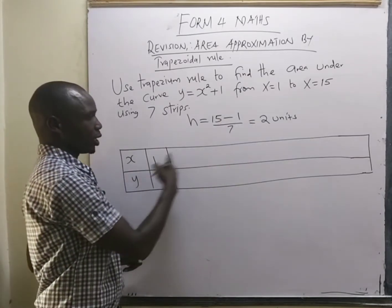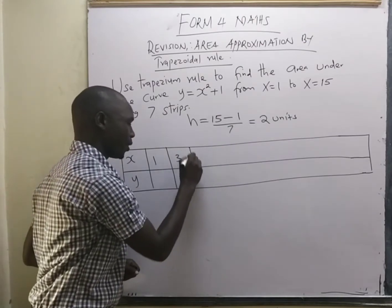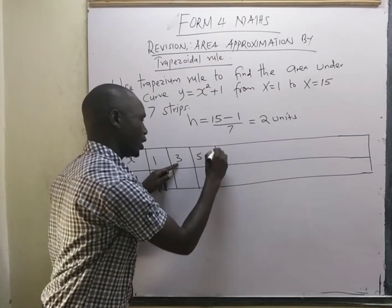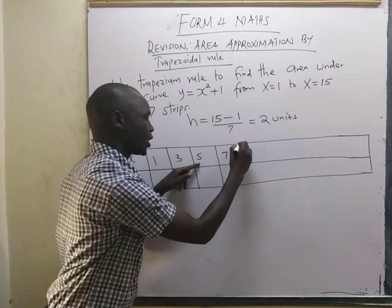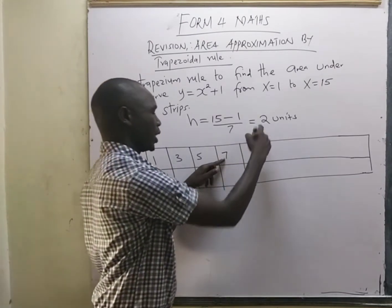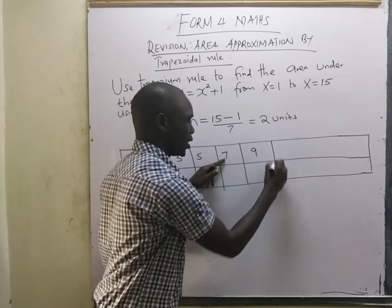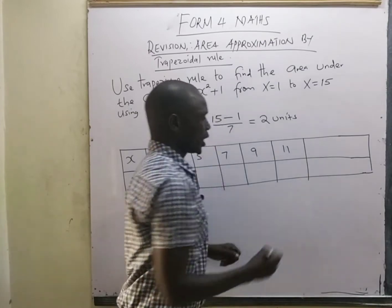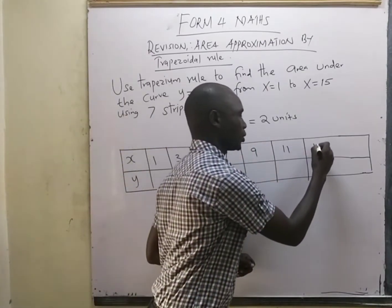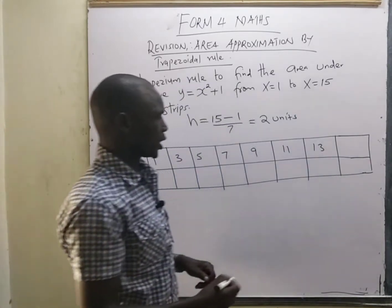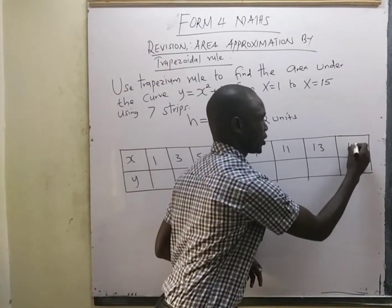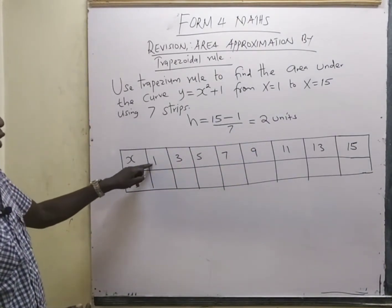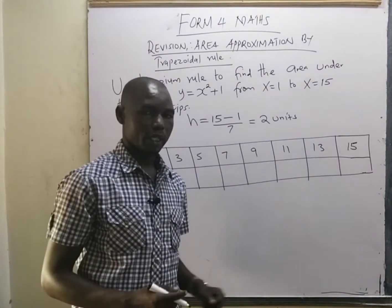Starting at x = 1, we add 2 each time: 1, 3, 5, 7, 9, 11, 13, and finally 15 — where we stop, since we are finding the area between x = 1 and x = 15.